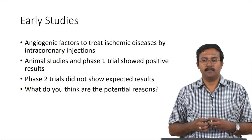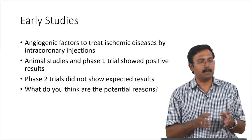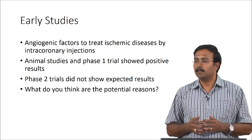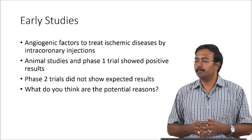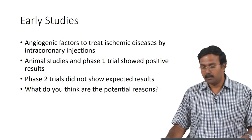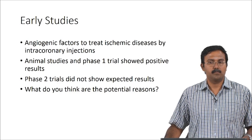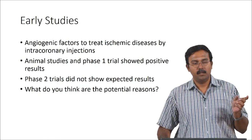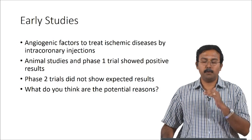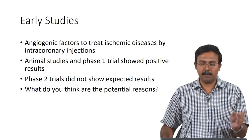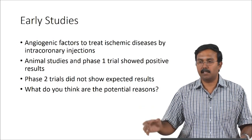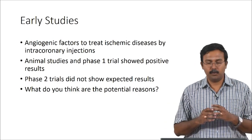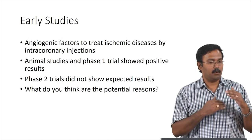Why did these trials fail? Side effects are a serious cause, partly because the delivery is not targeted enough. The difference between phase 1 and phase 2 trials is that in phase 1 you give sub-therapeutic dosage to a smaller number of patients to check for harm, whereas in phase 2 you deliver therapeutic levels to a larger patient sample size. For any drug, there is a therapeutic index with a minimum effective concentration and a maximum toxic concentration - the window between these is the therapeutic concentration.